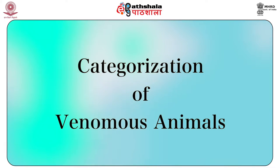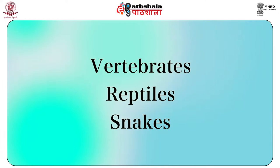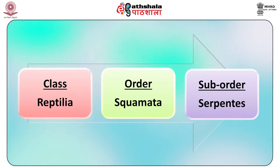Starting with the categorization of venomous animals: several species of animals with or without backbones produce venoms or contain certain toxins that may be dangerous to humans, either externally by stinging, biting or by ingestion. First, starting with the vertebrates — reptiles. Under reptiles we will study snakes. Snakes belong to the class Reptilia, order Squamata and sub-order Serpentes. Snakes are found all over the world except in New Zealand, Ireland and in Arctic lands.